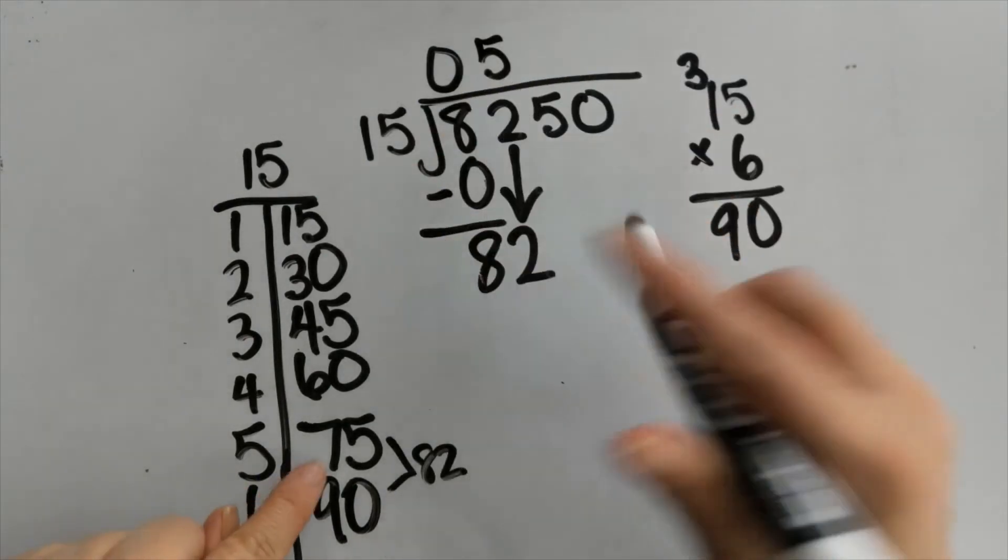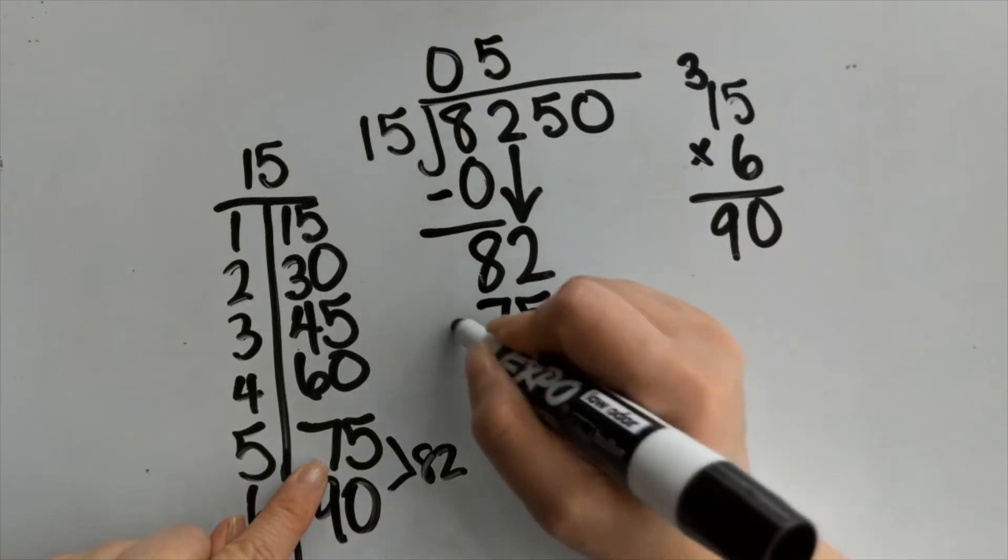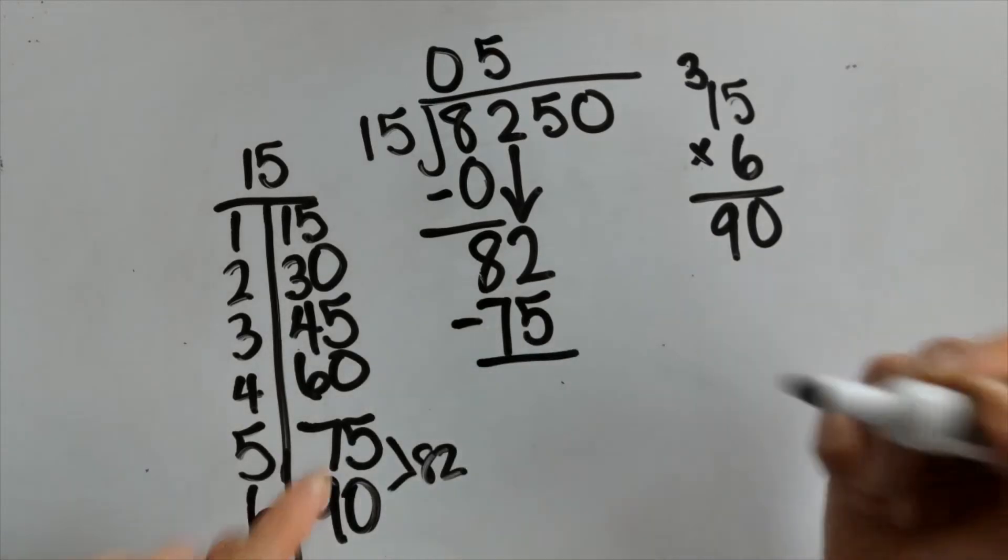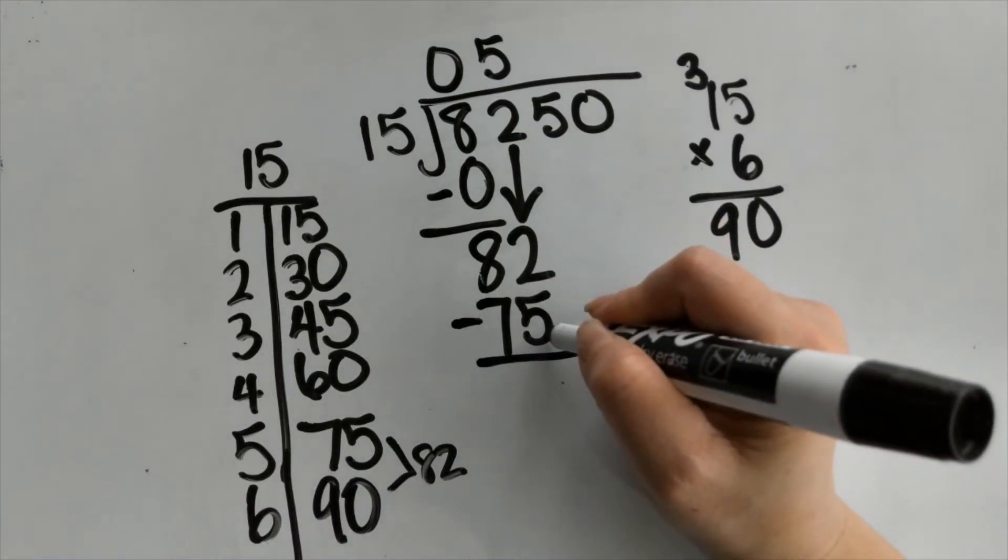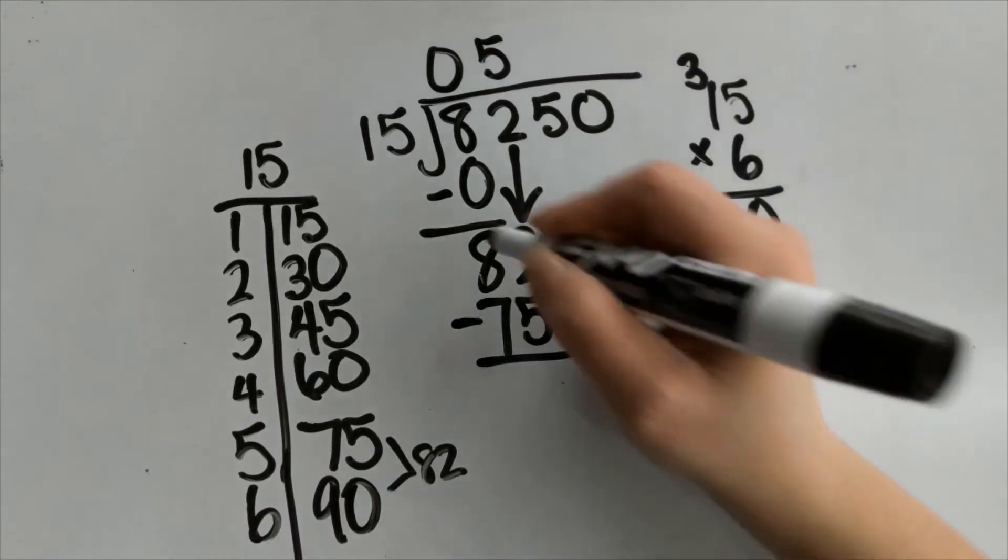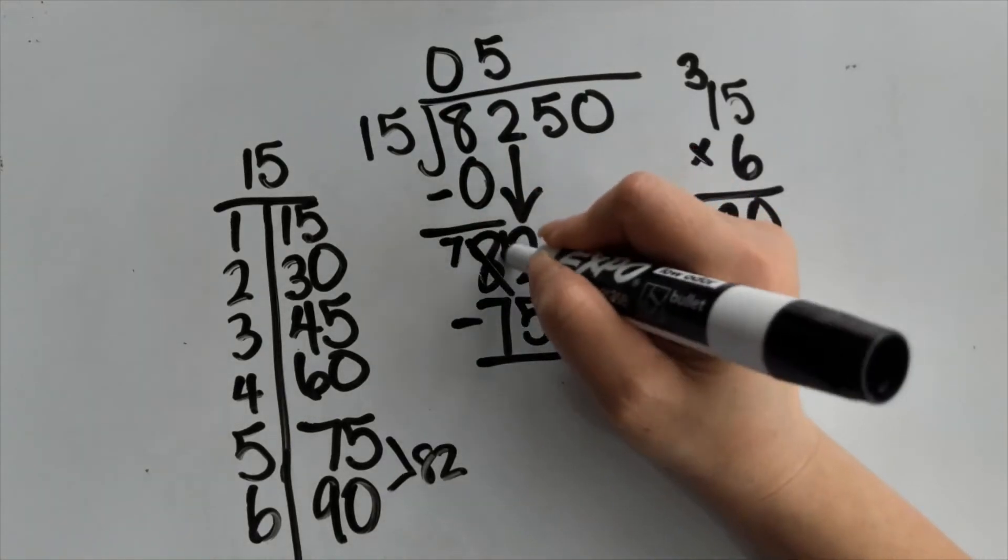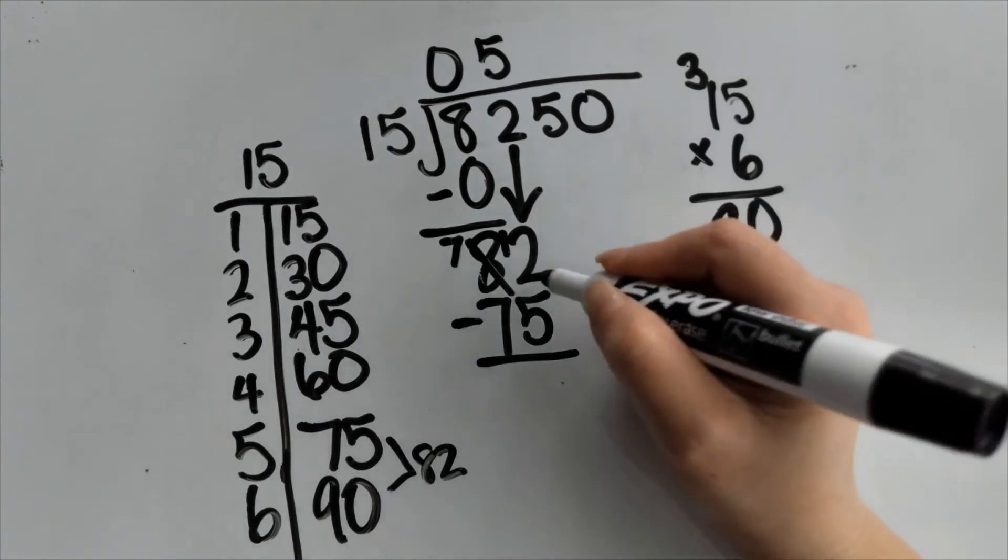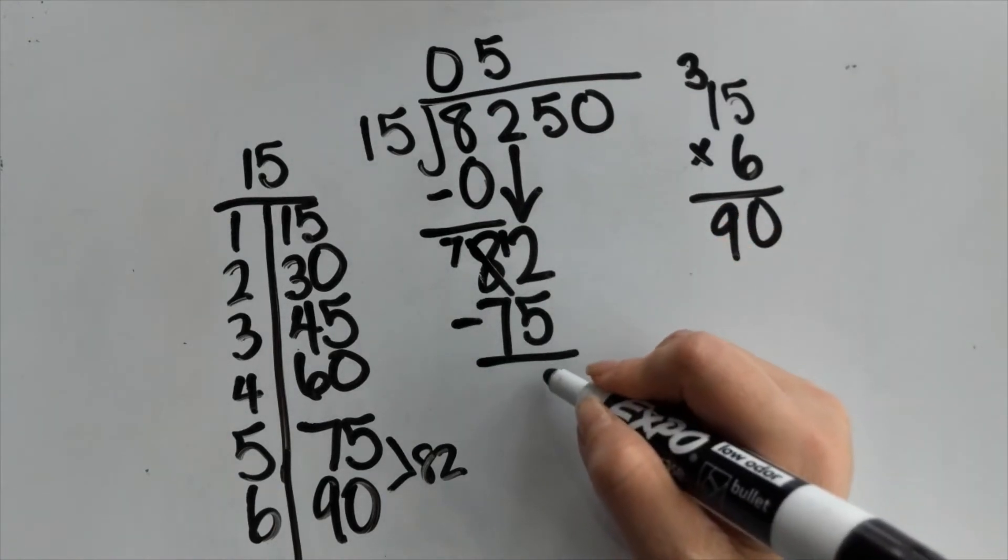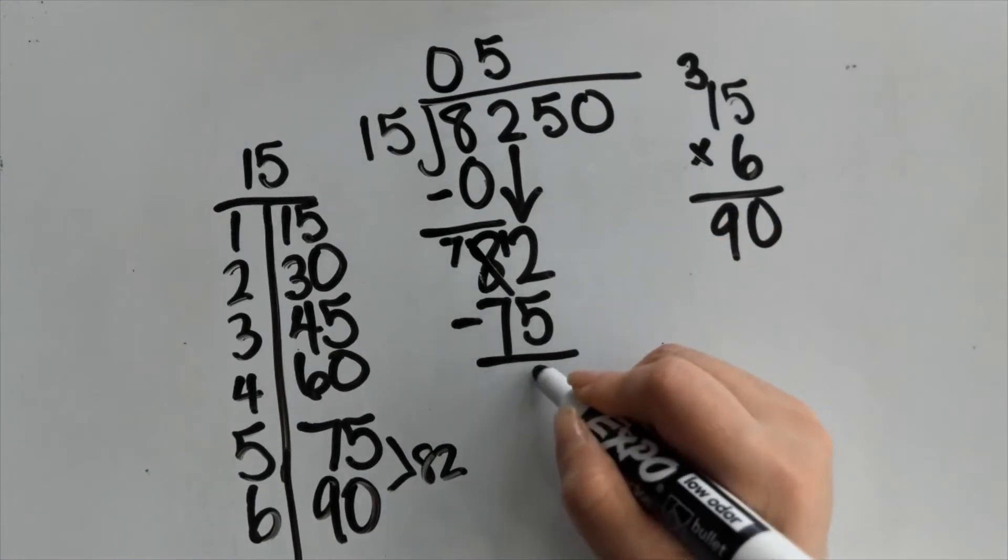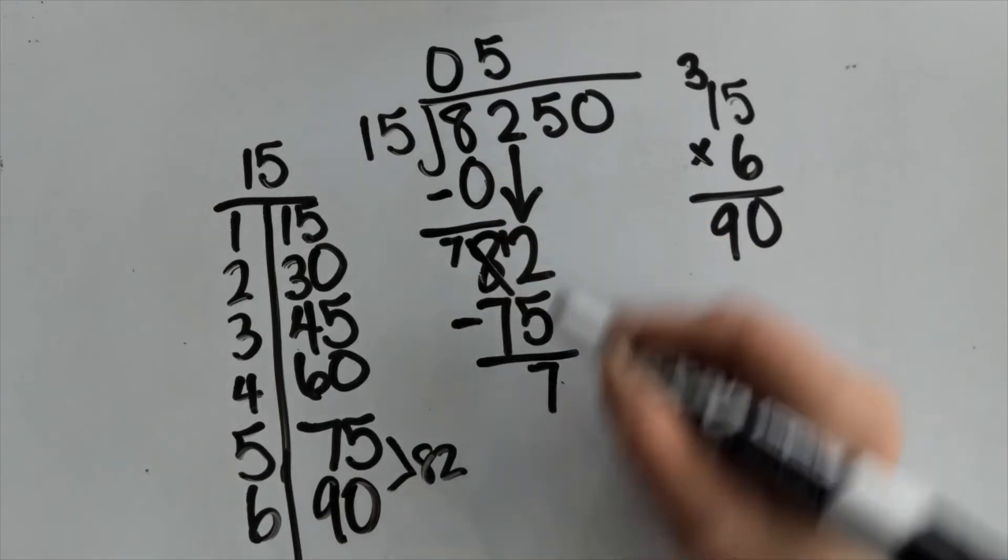I already know that 5 times 15 is 75, so I just plug this in. Now 2 minus 5, I can't do that, so I'm gonna borrow. So this 8 becomes 7, I'm gonna give that one back here. So now I have 12 minus 5 which gives me 7. 7 minus 7 which gives me 0.